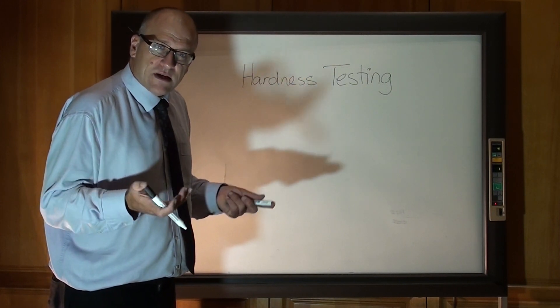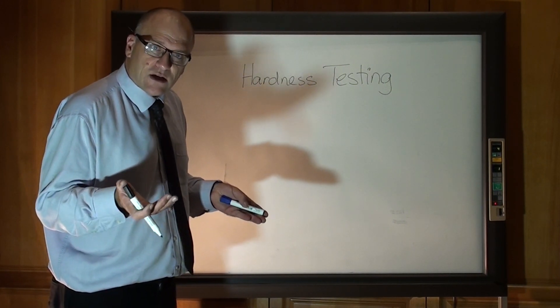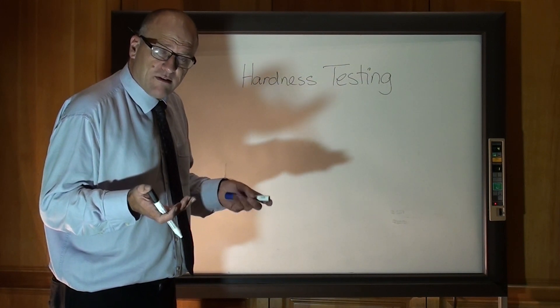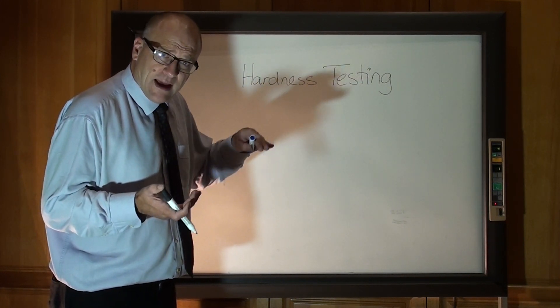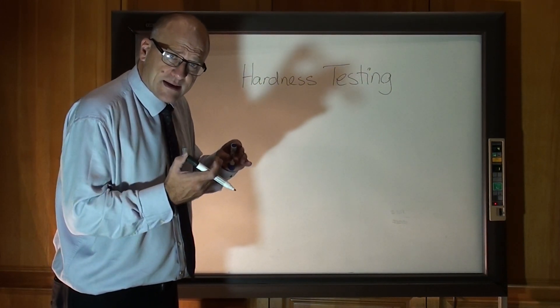Hardness for a particular material is an indicator of tensile strength. It changes per material. But if you've got the same material at a higher hardness, it has higher tensile strength.